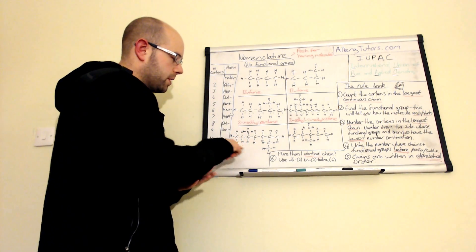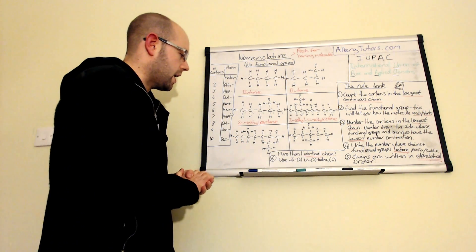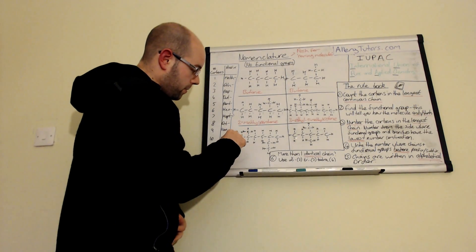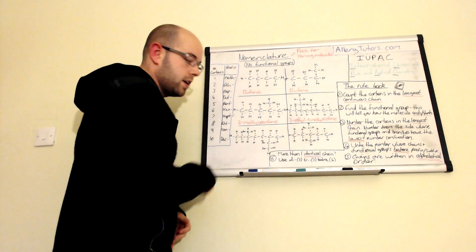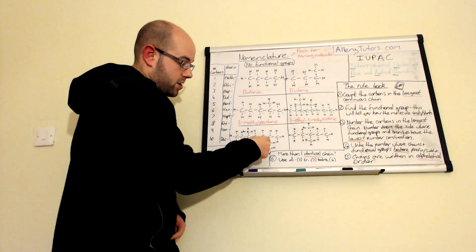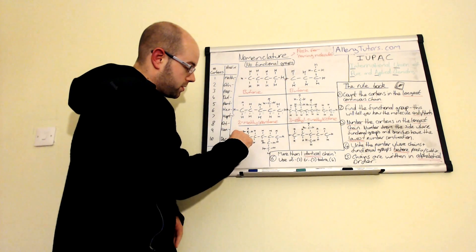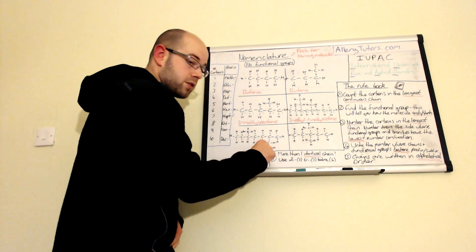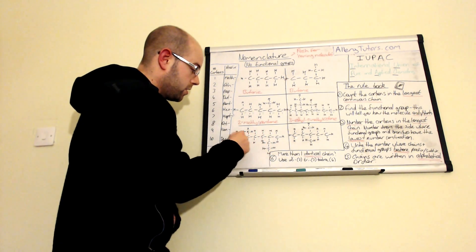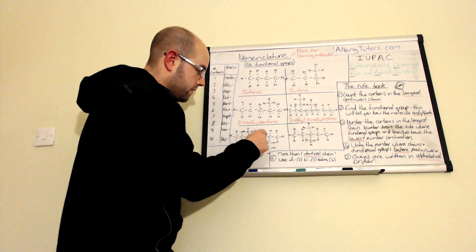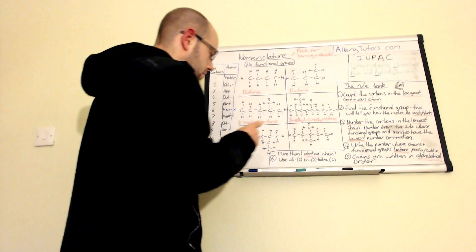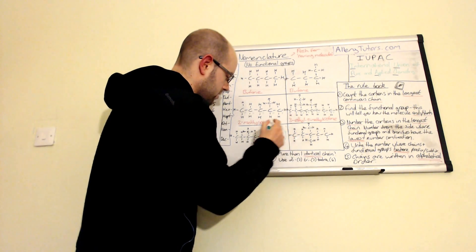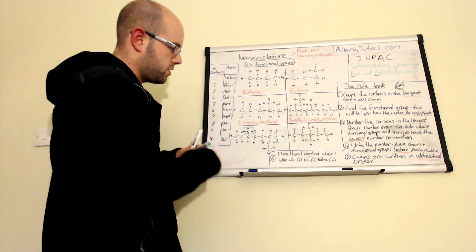For the next molecule, we try to find the longest continuous chain again. Going one direction gives seven carbons, but what might look like a branch is actually part of the longest chain. The longest continuous chain here is actually eight carbons: one, two, three, four, five, six, seven, eight. What appeared to be part of the main chain is actually our branch, along with another branch. So our longest chain has eight carbons, and we have two branches hanging off it.